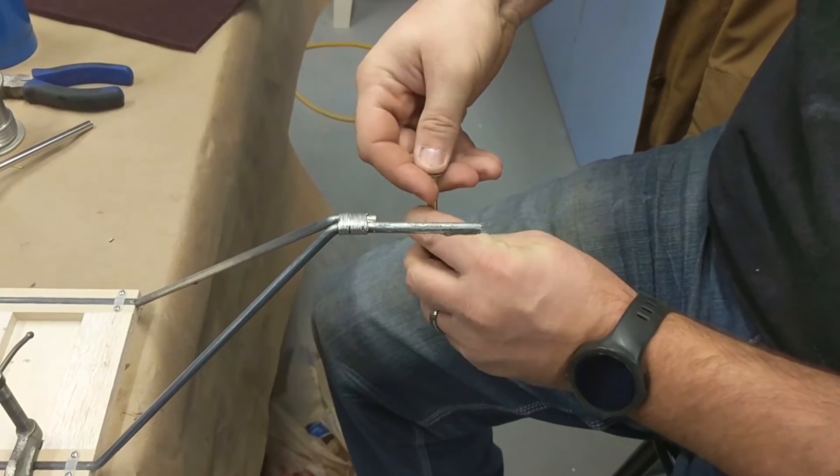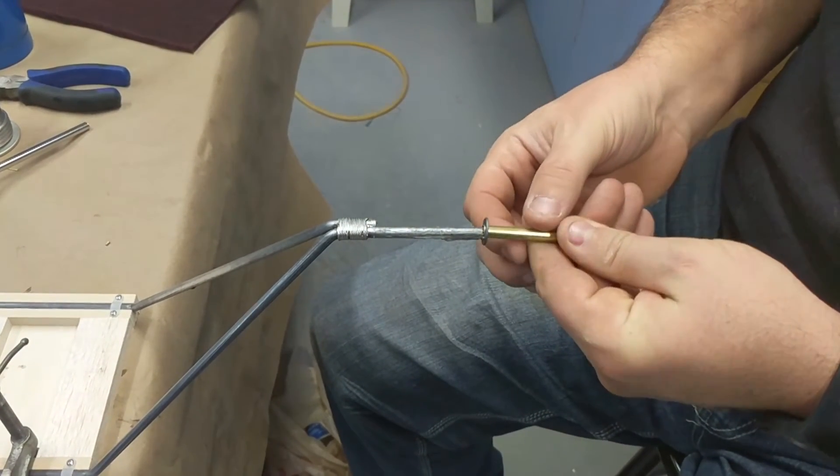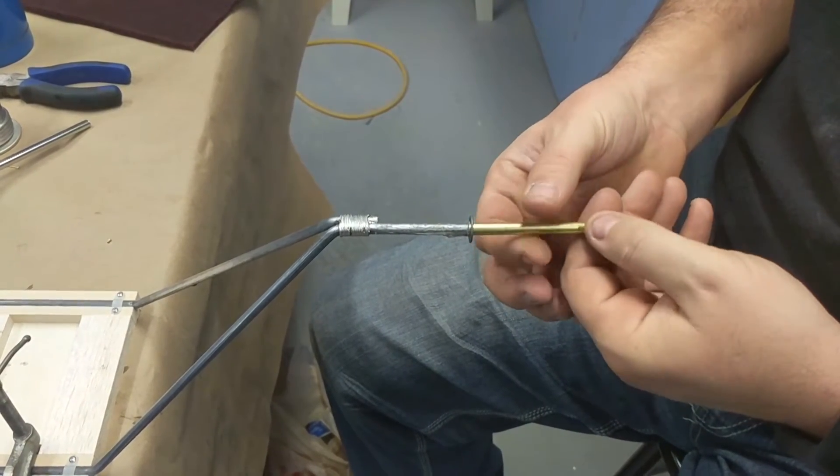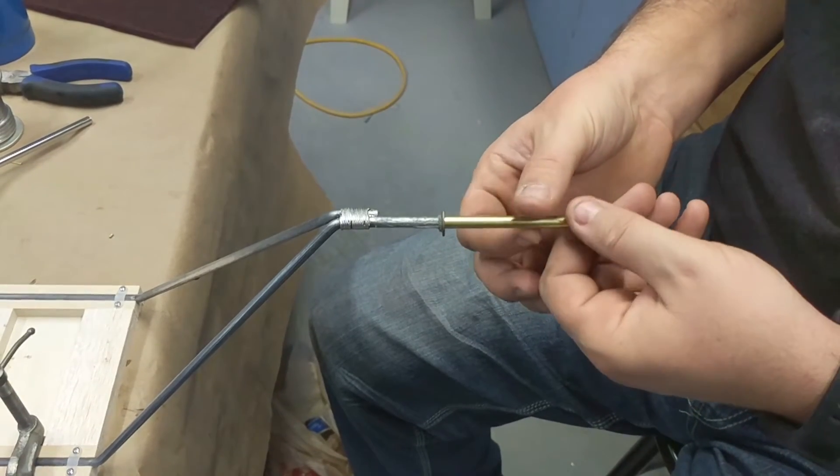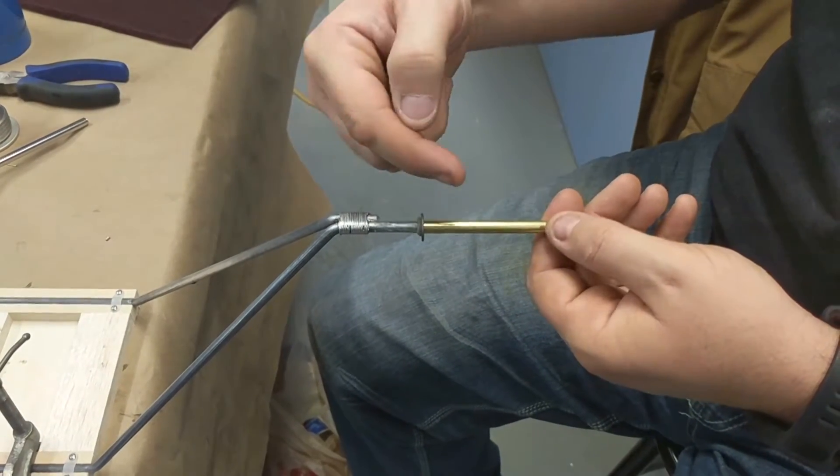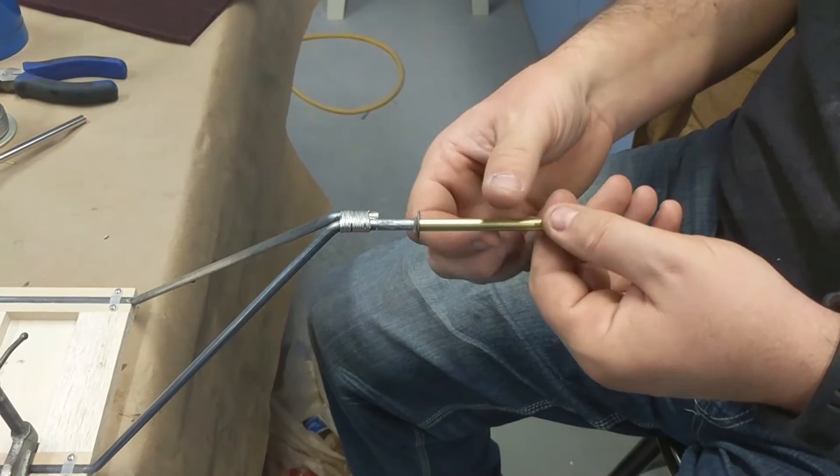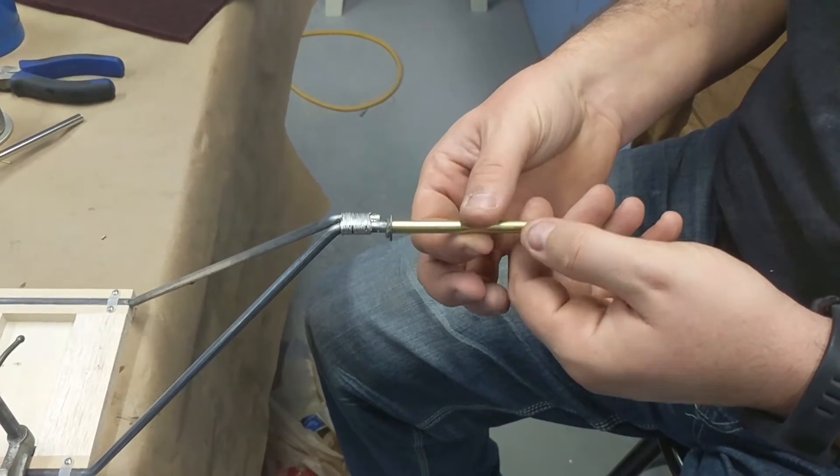So I'll take my washer, I'll put it on the end of my brass tube, and I'll slide it on. And as I'm sliding it on, I'm going to spin the brass tube, and this gets the flux on the inside of the brass tube, and it makes sure that it gets it all the way around.